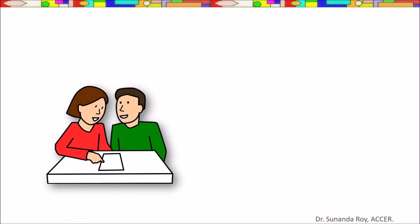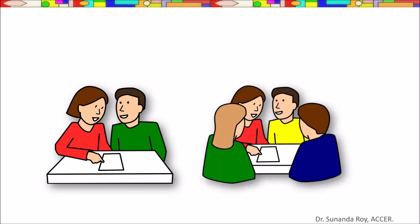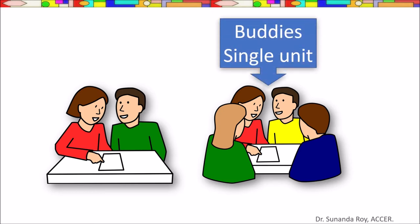In education, Buddy System pairs students in a classroom and asks them to support each other with specific tasks or skills. The Buddy System is basically working together in pairs or even in a group. That means while working in a group too, the Buddy Pair works like a unit.